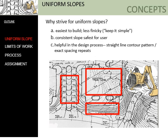To start with, we want to talk about why you want to have uniform slopes. There are three really simple answers. Number one, they're easy to build — they're less finicky, you want to keep it as simple as you can. Second, a consistent slope is safer for the user, and we're going to talk about that both in terms of pedestrians and vehicles.